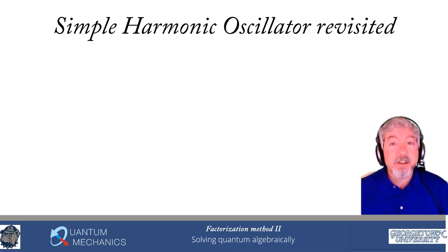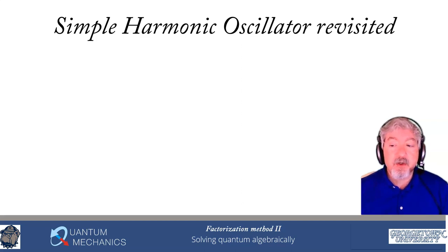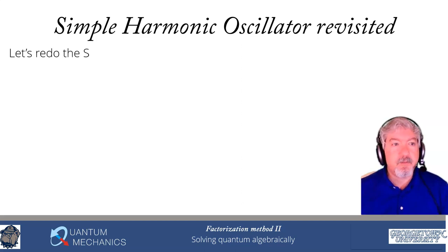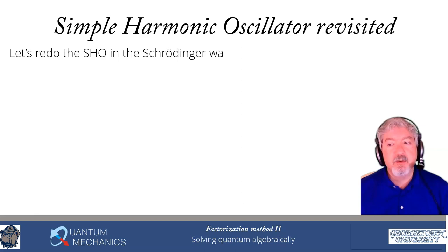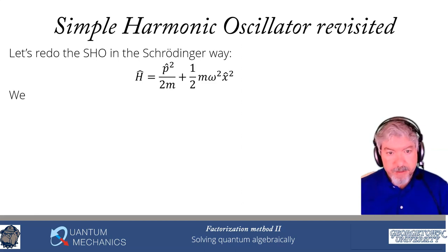Let's go through our simplest example of the factorization method: the simple harmonic oscillator. Let's now do it in the Schrödinger methodology. The first thing we have to do, looking at this Hamiltonian, is construct our ladder operators.